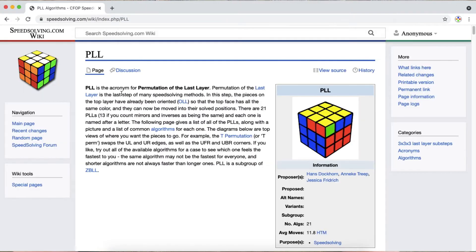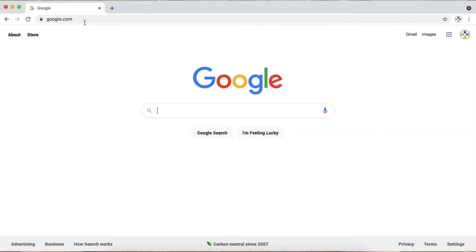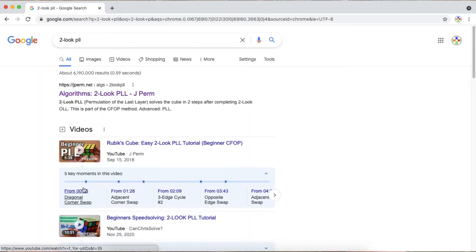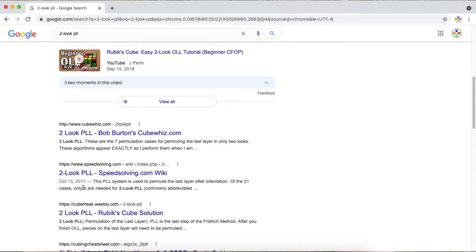Now two-look PLL is exactly what it sounds like: you do it in two algorithms. Therefore, you have to look at it once, do an algorithm, then look at it again and do another algorithm.